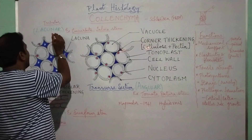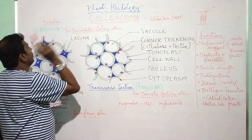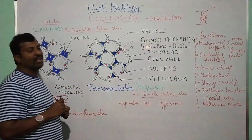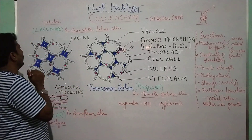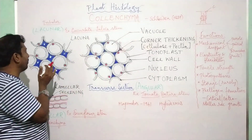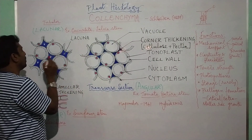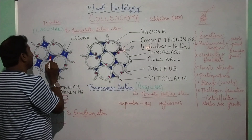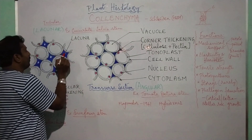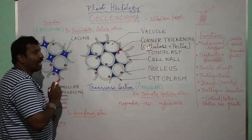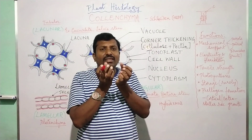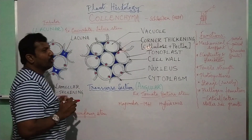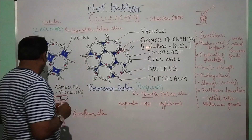The second type is Lacunar Collenchyma. Examples are Cucurbita — that is the cucumber stem, Cucurbitaceae, Salvia stem — found in the hypodermis. Similar to Angular Collenchyma, the intercellular spaces are filled with pectocellulosic substance, but it leaves very small gaps. These gaps are called lacunae. Since it is a very small anchored area, it appears like a tube. That's why it is also called Tubular Collenchyma or Lacunar Collenchyma.